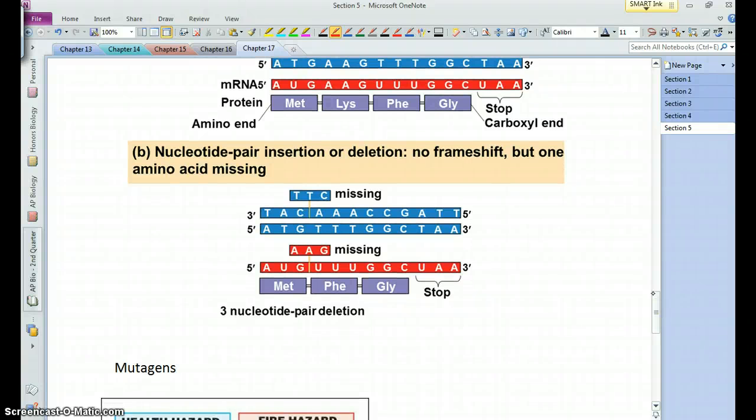This shows a type of deletion where you're deleting essentially a whole three bases from the DNA, which essentially means you're missing a whole codon equivalent from your mRNA. Now we just have a missing amino acid in this protein.